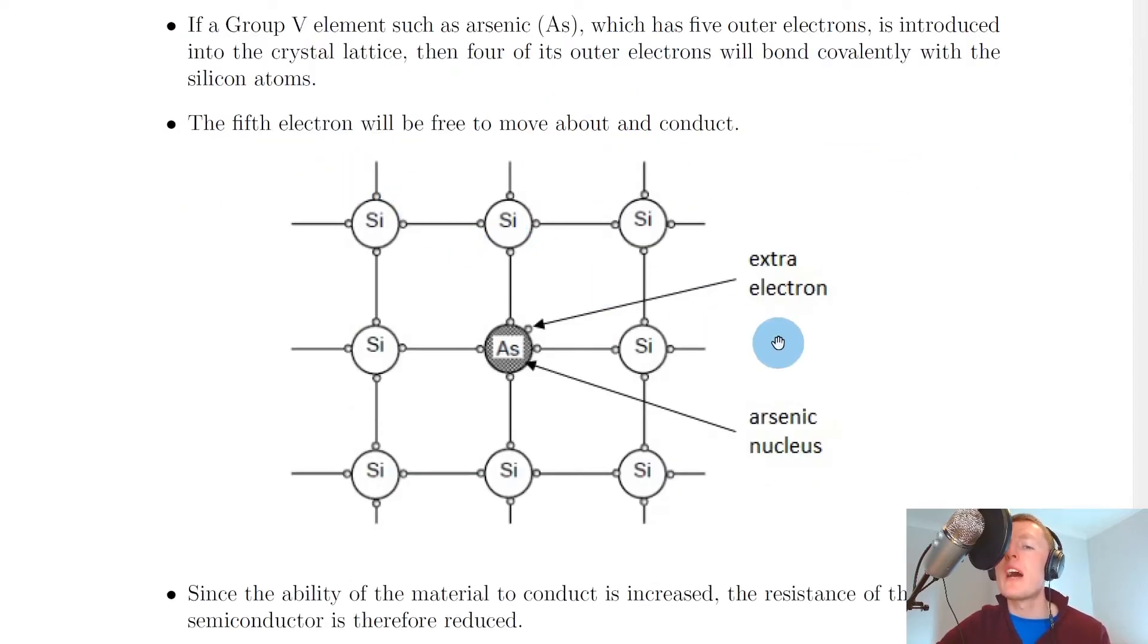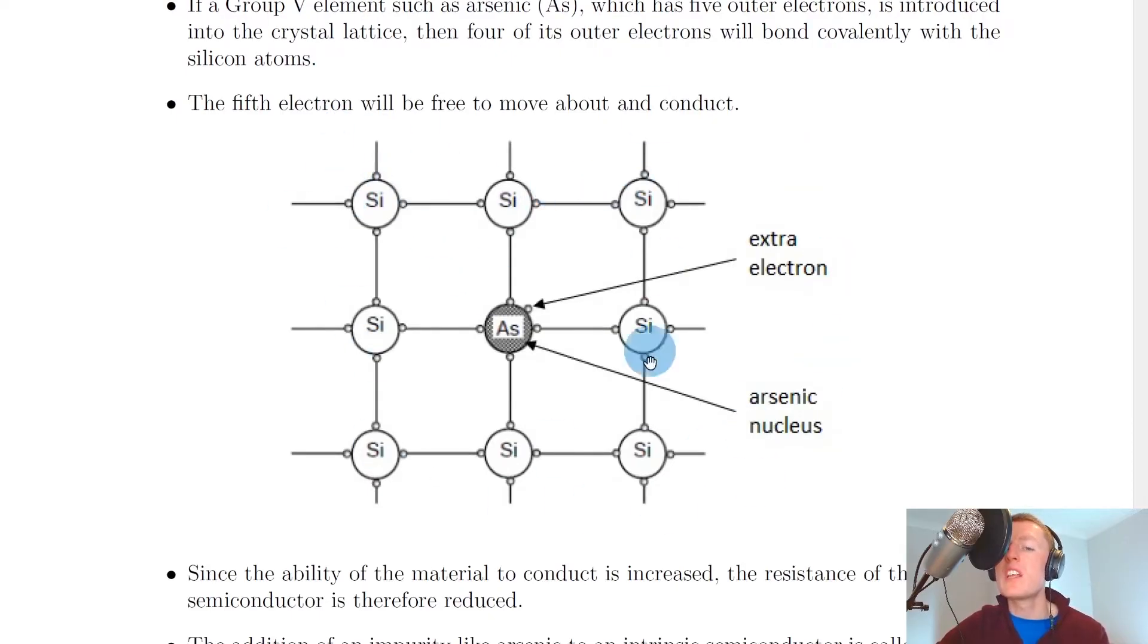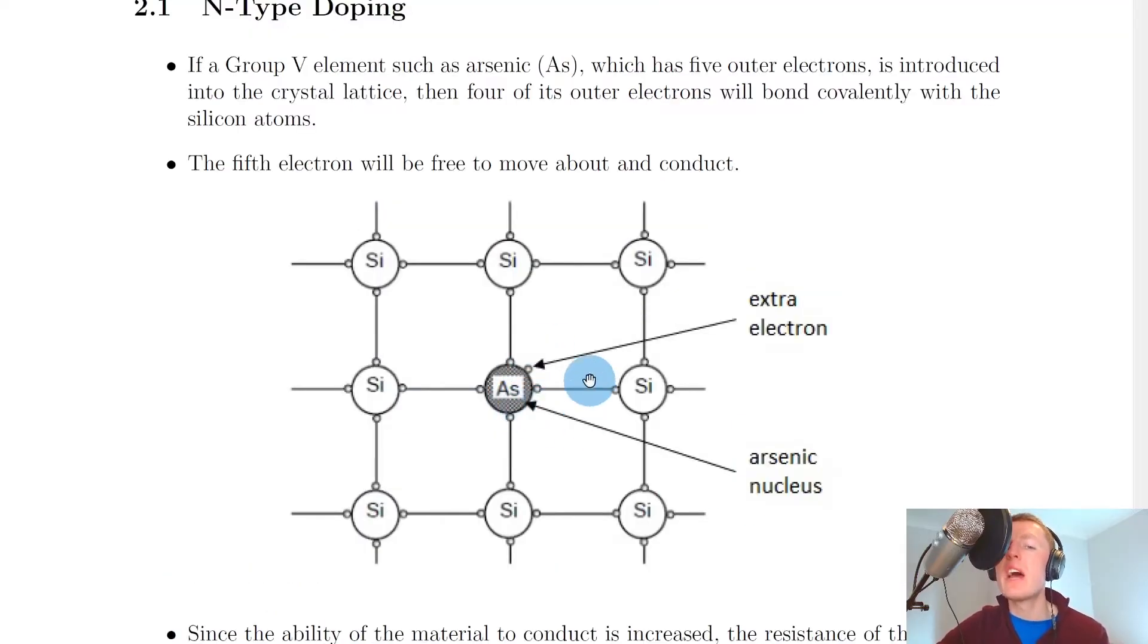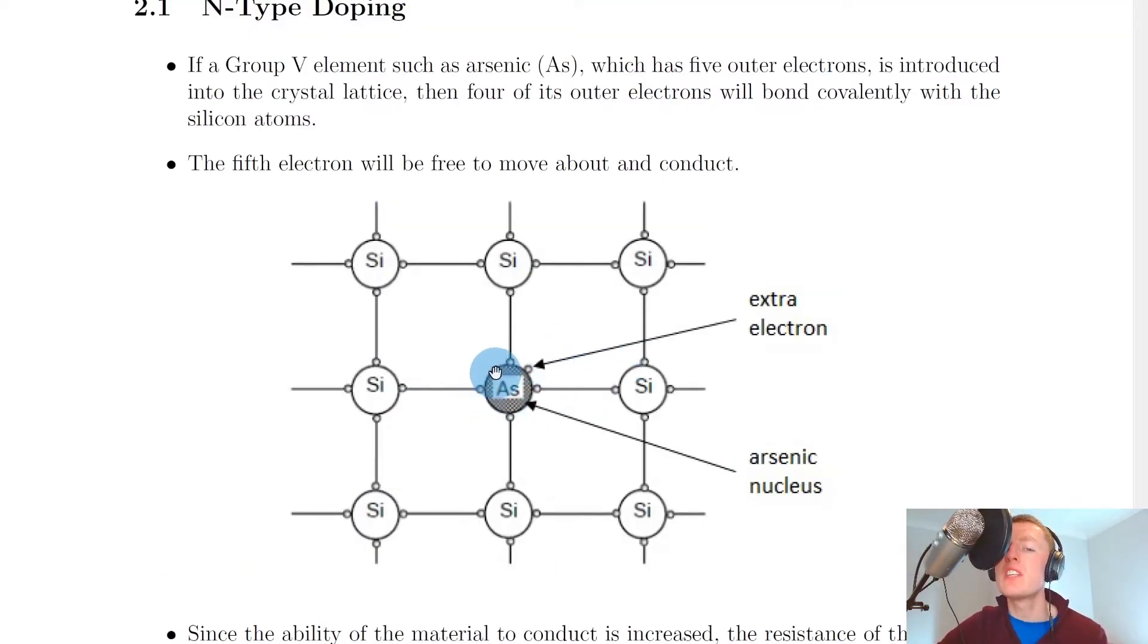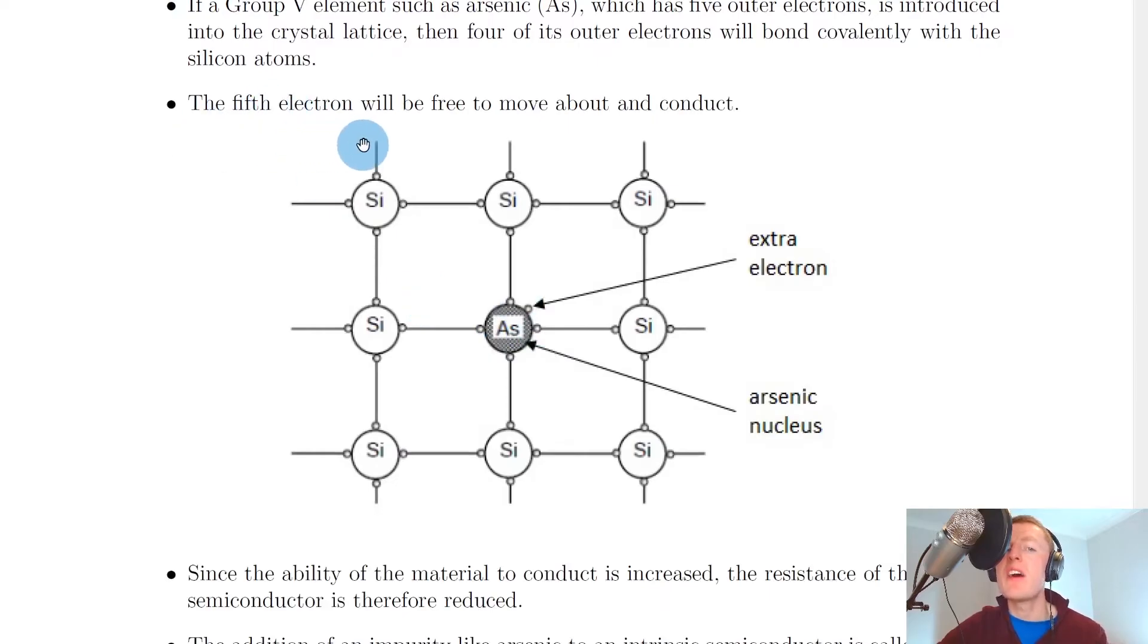Remember our crystal lattice structure of the atoms in the material, where we've got these silicon atoms with their four valence or outer electrons. If we introduce one atom of arsenic here with its five outer electrons, then the fifth electron will be free to move about and conduct.